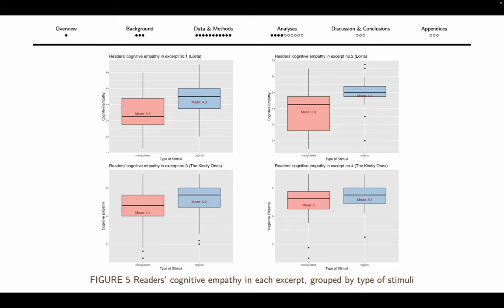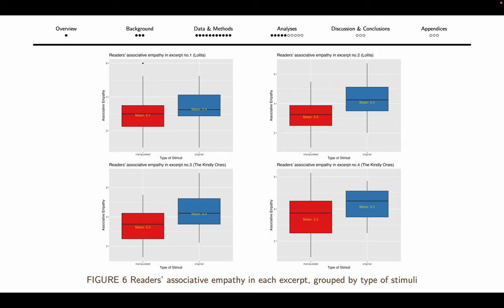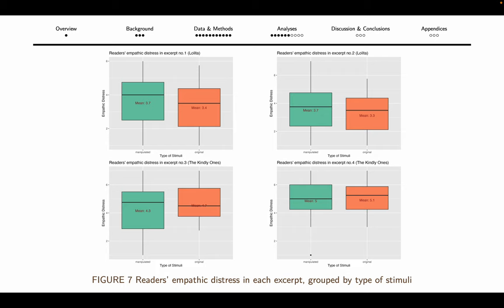The same situation is found in the cognitive empathy variable: readers of original texts could understand and recognize the character's situation more easily, especially in excerpt 2 from Lolita. Highest scores for the associative empathy variable — relating to the character's situation — were reported again for original texts, and this trend holds for all excerpts, with relevant differences especially again in excerpt 2 from Lolita. A different situation is displayed for the empathic distress variable, especially in Lolita excerpts 1 and 2, where readers provided with manipulated excerpts reported slightly higher ratings of unpleasant feelings while reading. The plots for The Kindly Ones instead show higher scores for the original condition, but the difference is rather small.